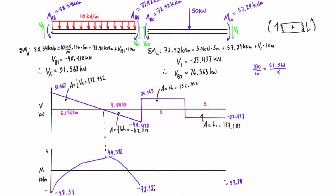In the next region the area is positive, giving a linear change: negative 72.92 plus 132.815 brings us up to 59.895 kN·m. Then for the last segment, 59.895 minus 117.185 gives negative 57.29 kN·m — which confirms the endpoint we already knew. These calculations verify that all three known points are consistent and define the correct shape of the bending moment diagram.